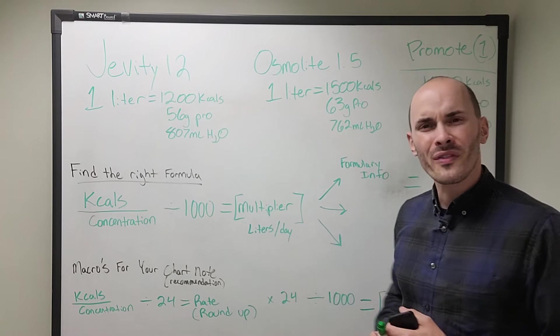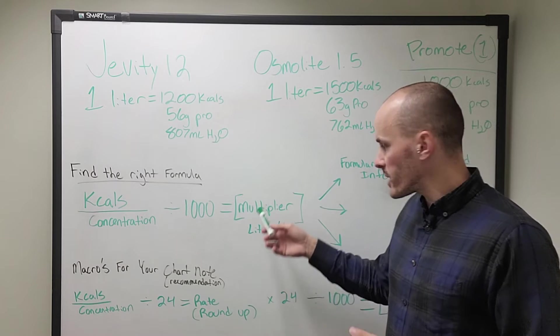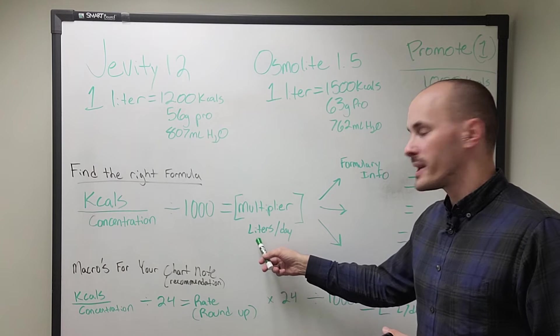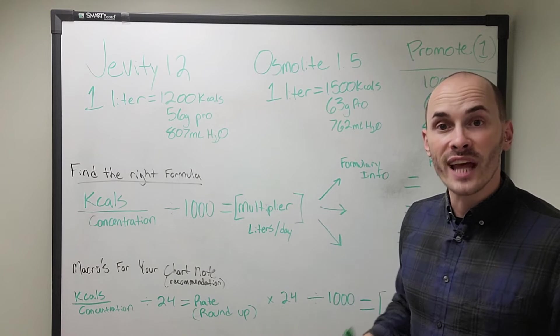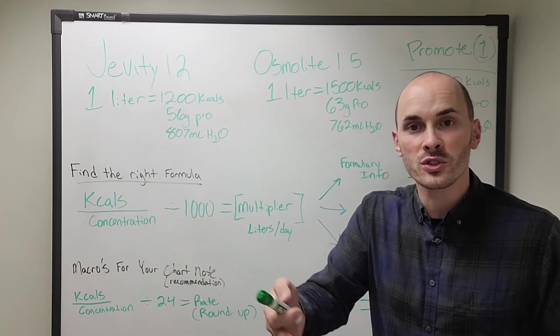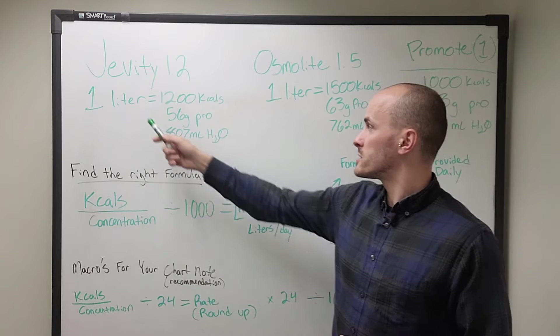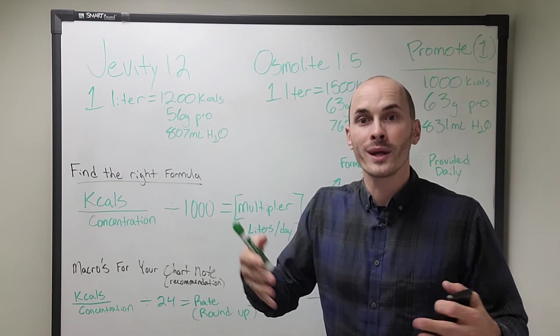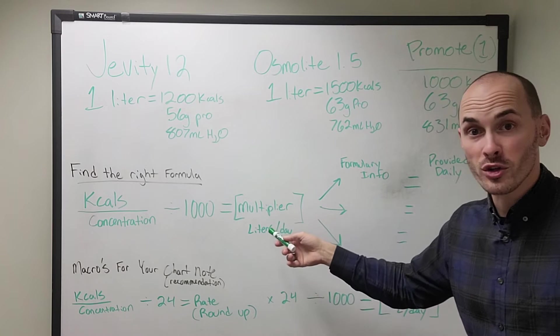Remember we use that term multiplier. That's going to be able to be plugged into your formula to determine a lot of different factors. That multiplier, what that number means, if it's a 1 or a 1.5 or a 2, whatever that multiplier is, what that means is it's how many liters of formula per day. Now what your formulary teaches you or tells you, which is what I also have up here is what the calories, protein and water you get from one liter.